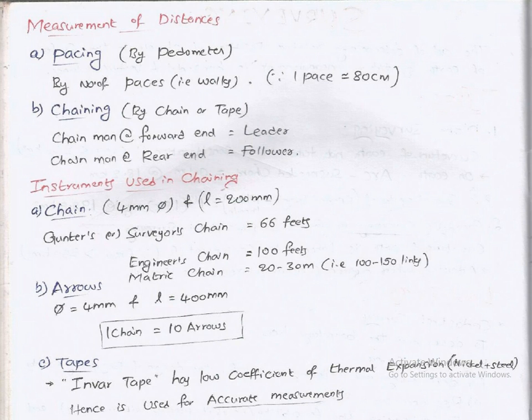Distance measurement methods: pacing by pedometer by number of paces, one pace is 80 centimeters. Chaining by chain or tape with chainman at forward end as leader and at rear end as follower. Chains include metric chain 20 to 30 meters with 100 to 150 links, Gunter's or surveyor's chain 66 feet, and engineer's chain 100 feet. Tape: invar tape has low coefficient of thermal expansion, nickel and steel, hence used for accurate measurement.